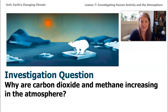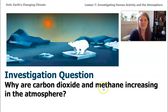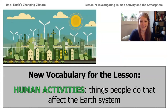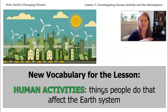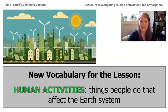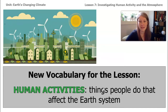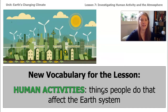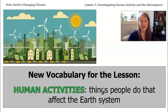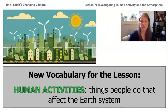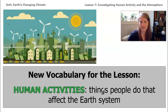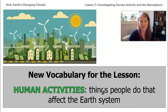Today we're trying to understand why carbon dioxide and methane are increasing in the atmosphere. We're looking specifically at human activities. The definition we're using is: human activities are things that people do that affect the Earth system. We'll be investigating ways to stop the increase of CO₂ and methane in lessons 8, 9, and 10, but in this lesson we're focusing on what these activities are and why they increase carbon dioxide and methane.